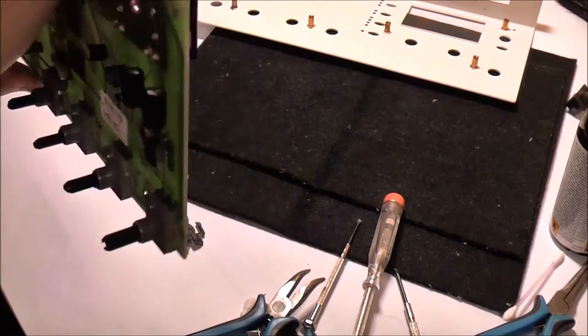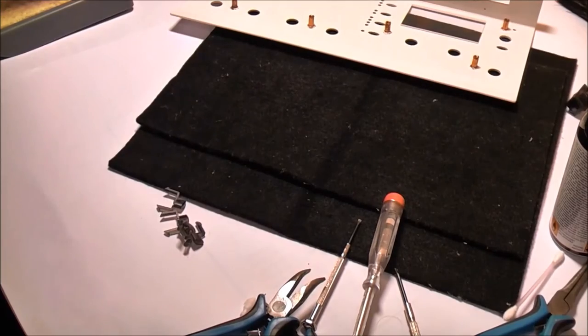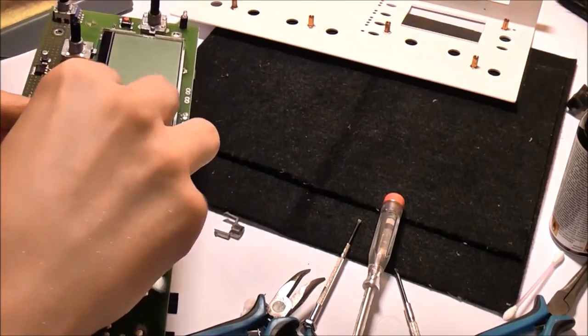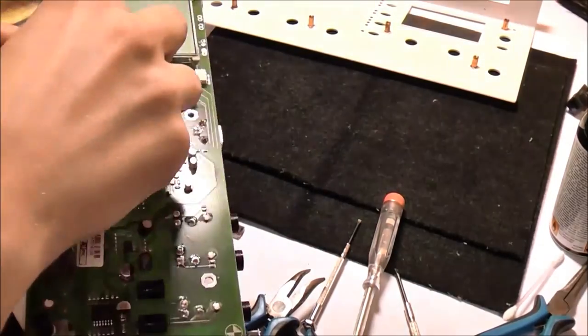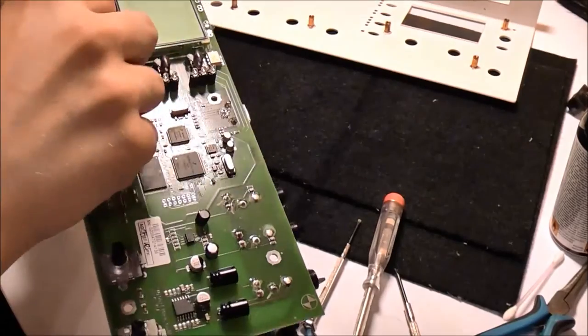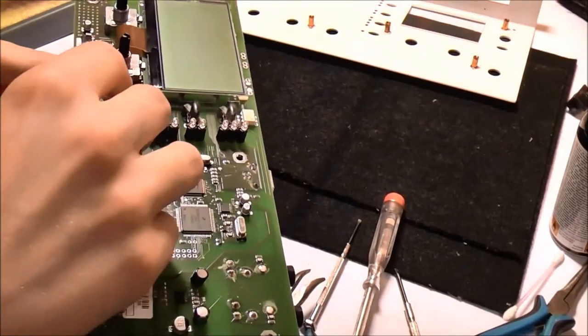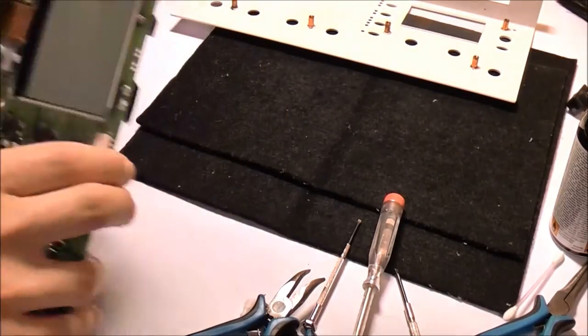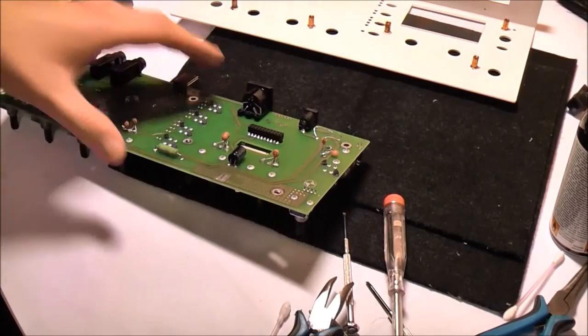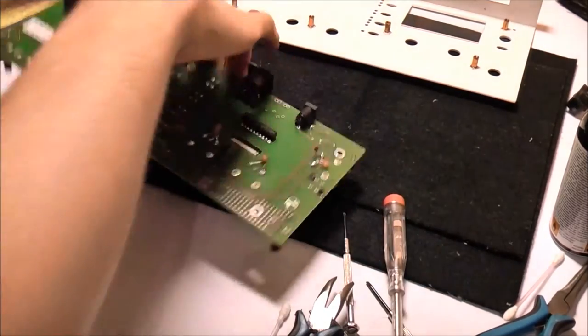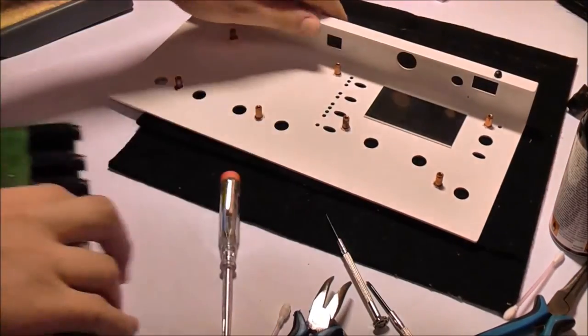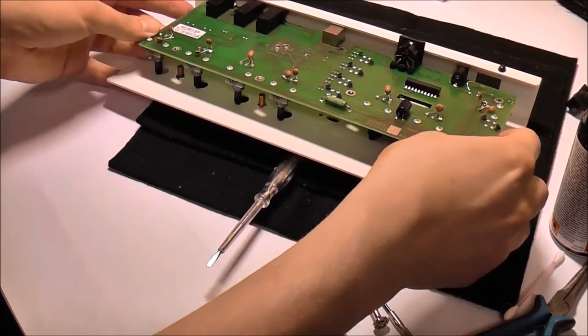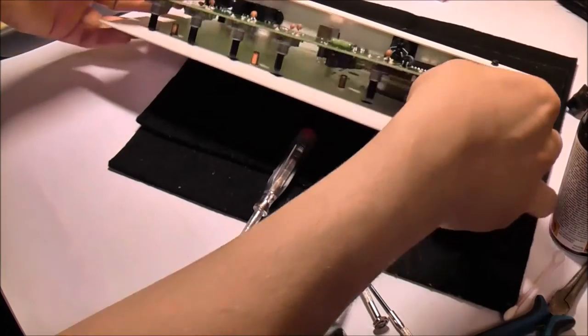When you want to assemble this thing again you have to put in first all the plastic parts for the buttons if you removed them. It's not as complicated as it seems. And secondly, you have to put in the PCB in the case again. Be sure not to forget the window for the display.